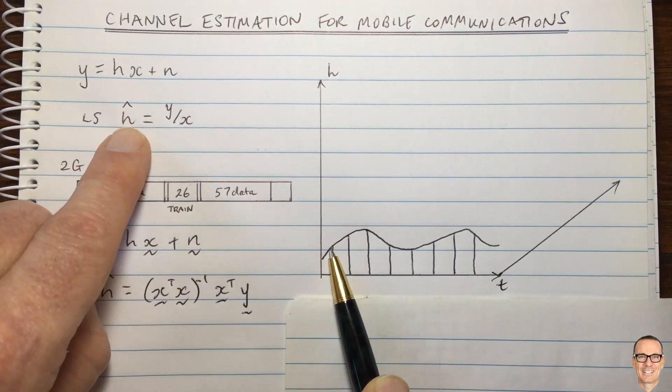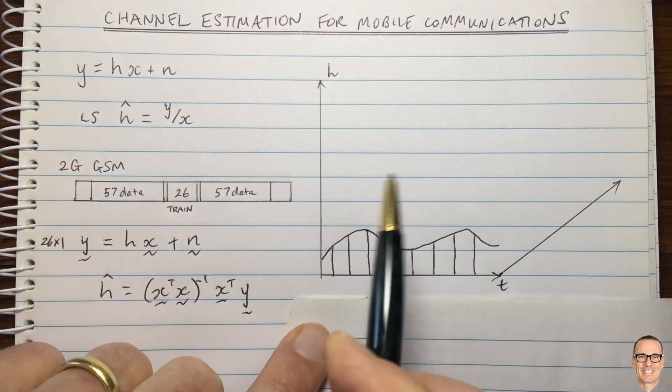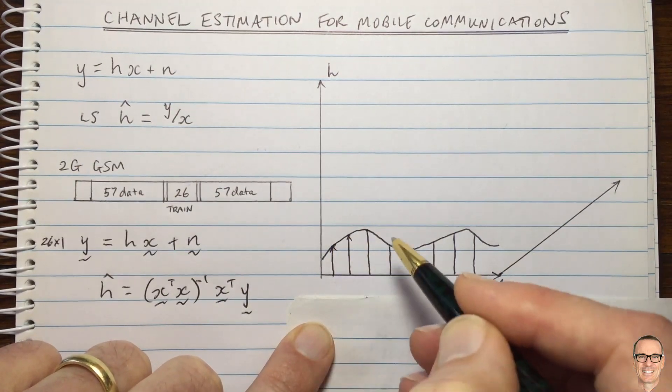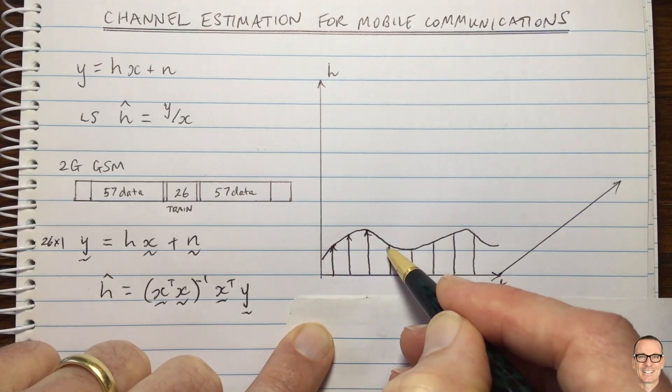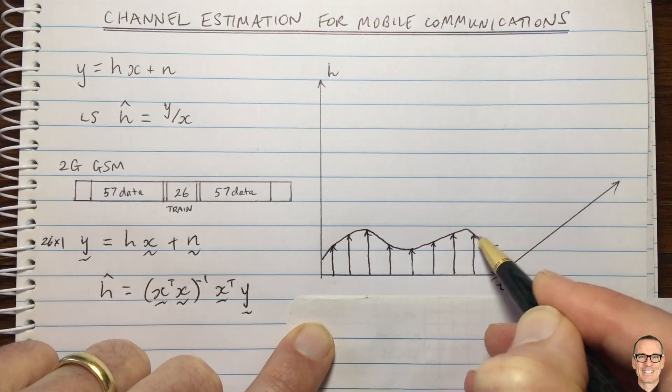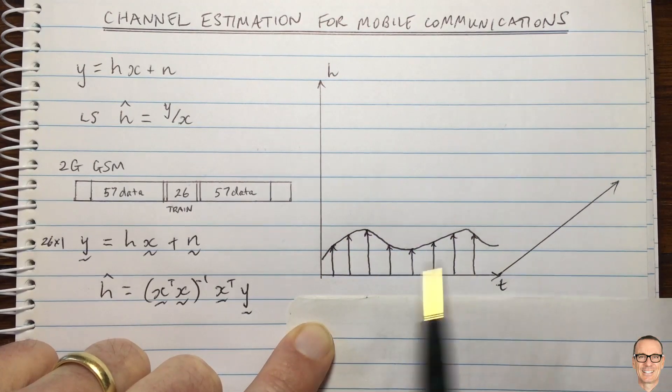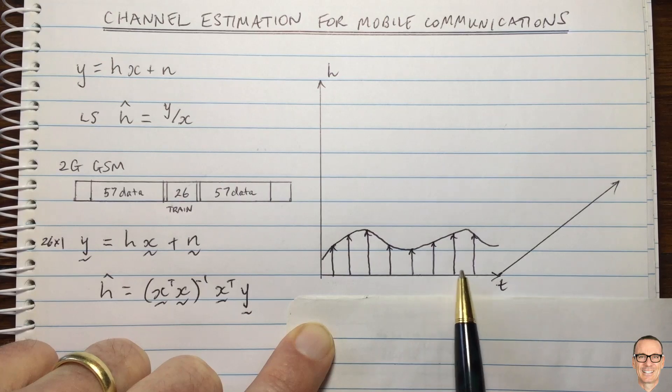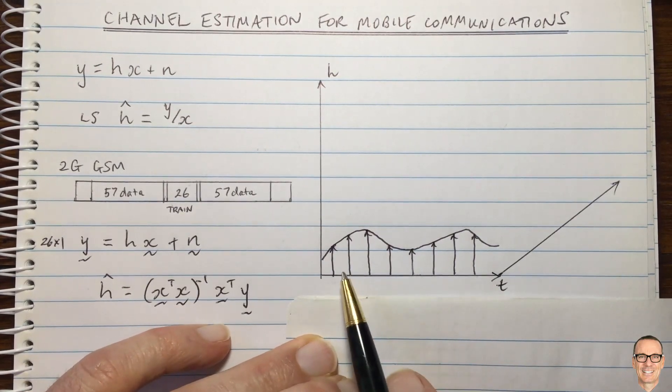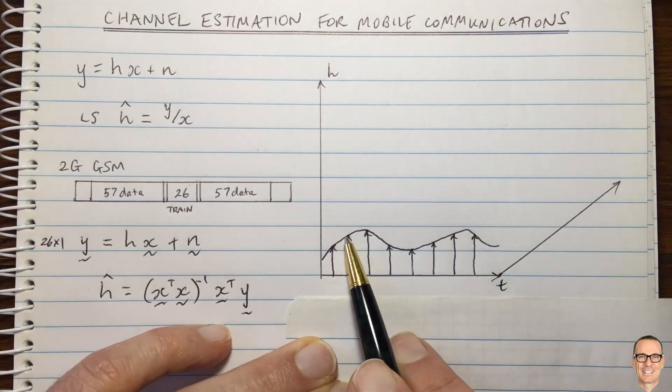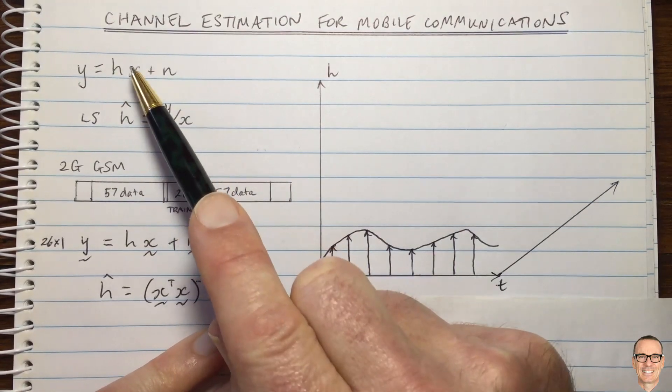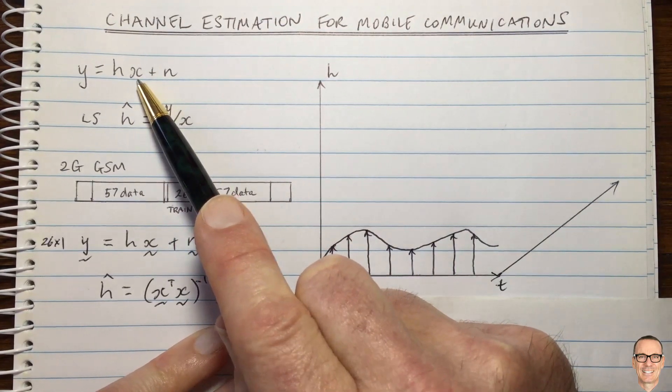You would get an estimate of the channel for that one symbol at each of the times where there's a line here. We could draw this like a sampling case, I'll just draw deltas on the top to indicate the idea of sampling. The channel is a continuous waveform and we are going to be sampling it at these discrete time intervals. Then of course it's interpolation that we need to do to recover the channel in between when we're actually sending data, so we can use that channel to estimate the data in between.